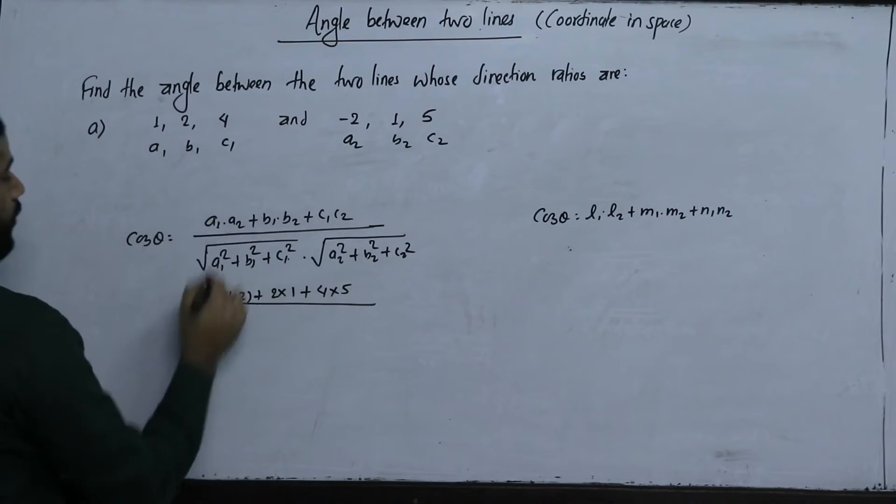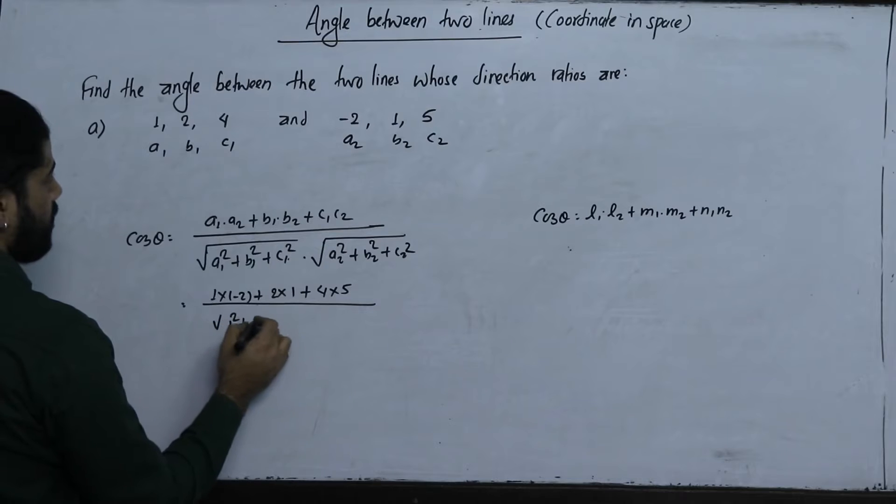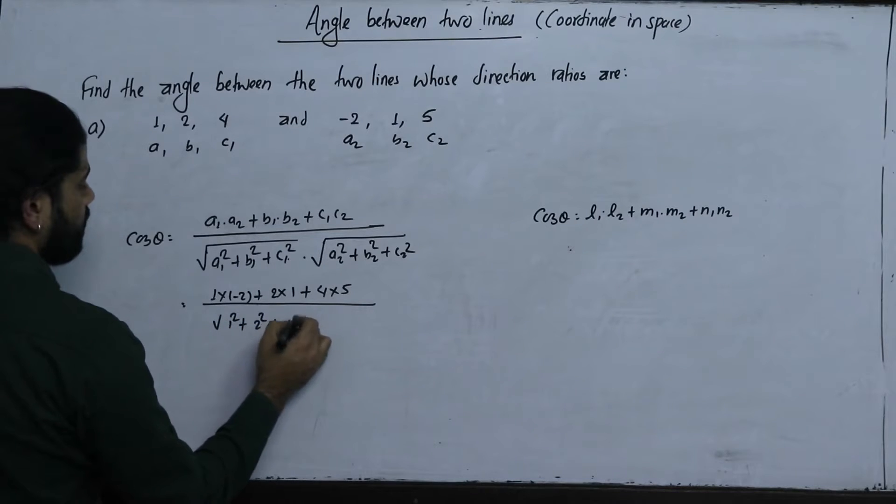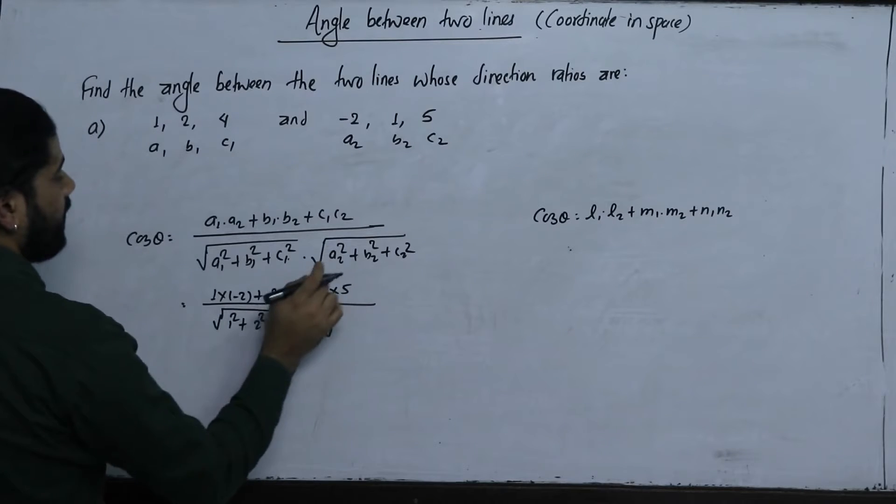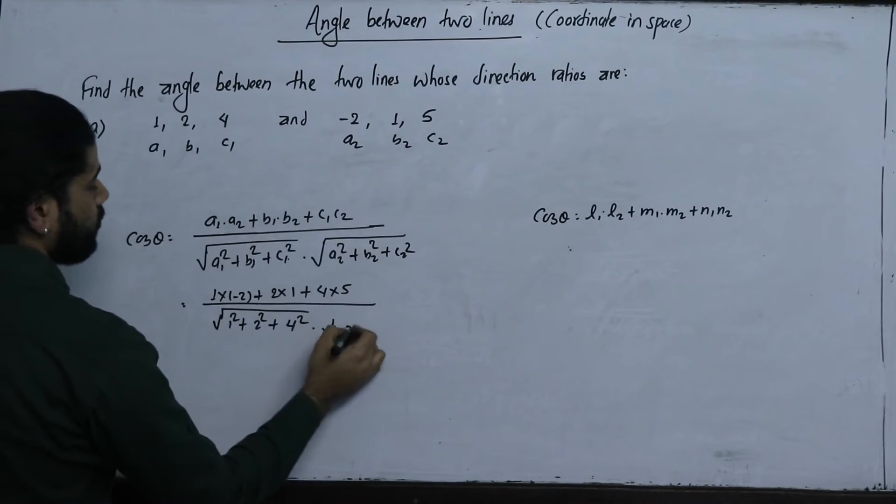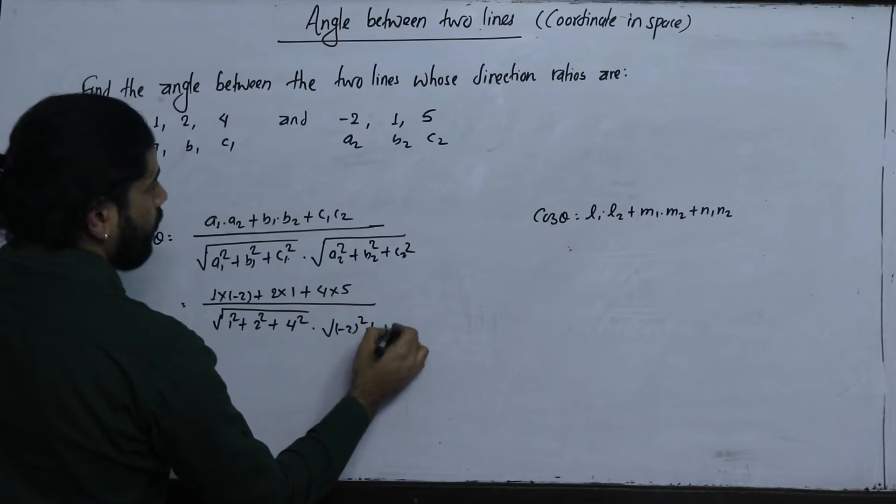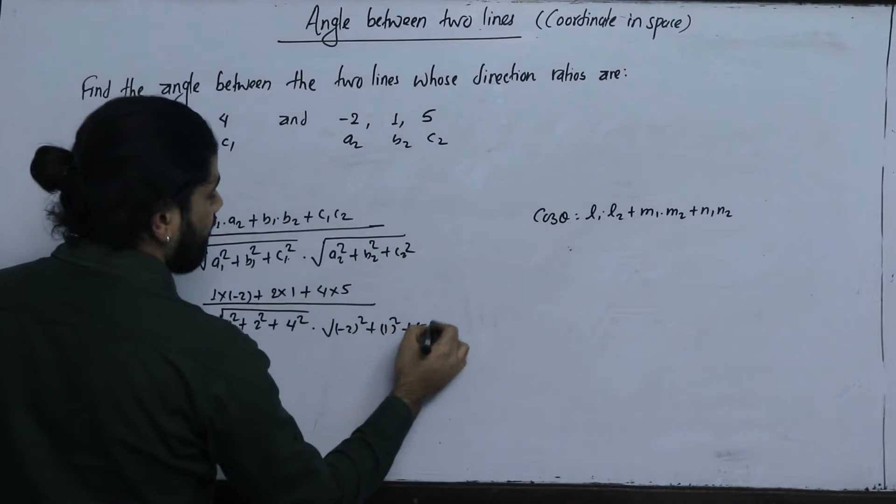Then 1 square plus 2 square plus 4 square, which are a1 square, b1 square, c1 square. Then divide by square root of minus 2 square plus 1 square plus 5 square.